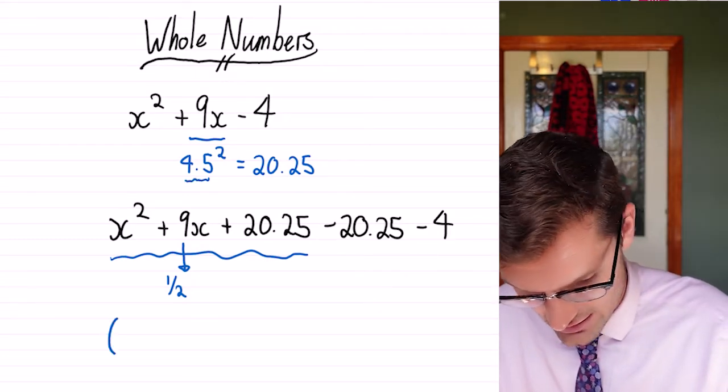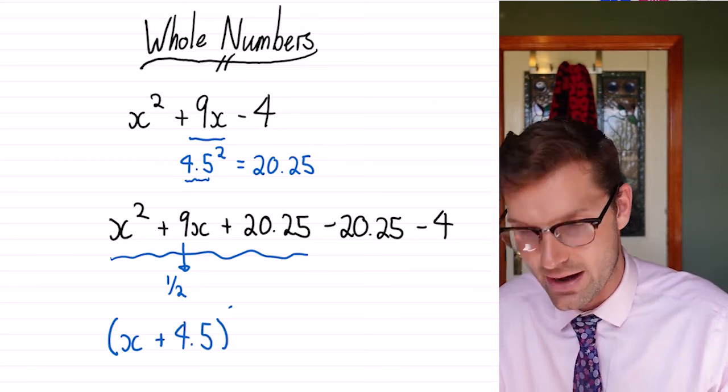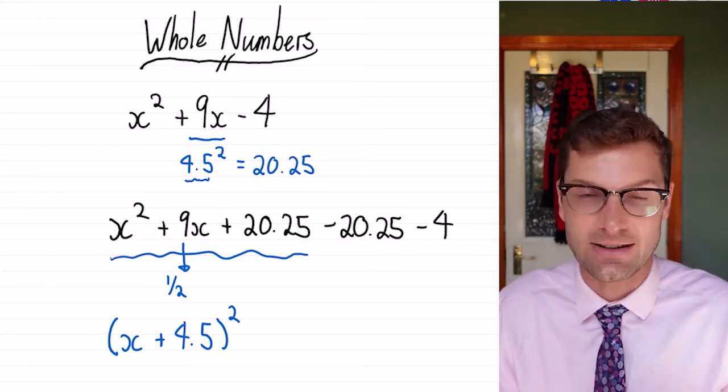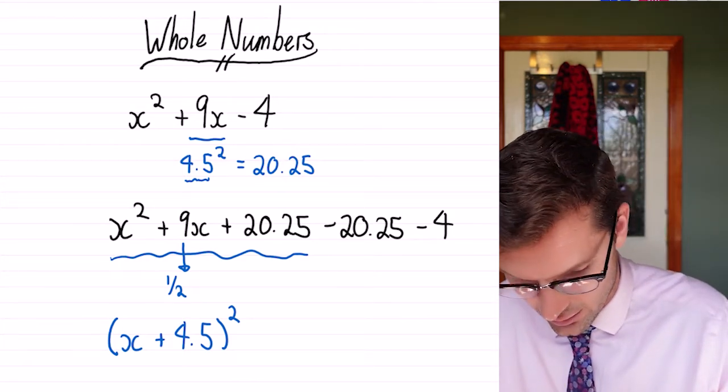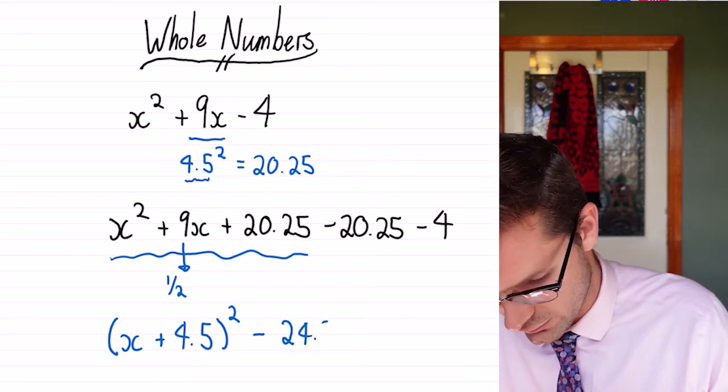that's what goes into this (x + 4.5)². That is the perfect square, because remember the perfect square is 2ab in the middle. Then we have to simplify this last bit, which is -24.25.